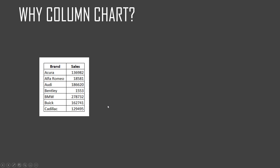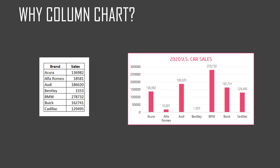However, if I show you the same data in a chart like this, now instantly we can see BMW is the largest brand in terms of sales out of the seven brands. I can also see Bentley is the last, and Audi is the second highest, and so on. So we were able to go from raw data in table format to information and insights very quickly in this chart format. This is a column chart.